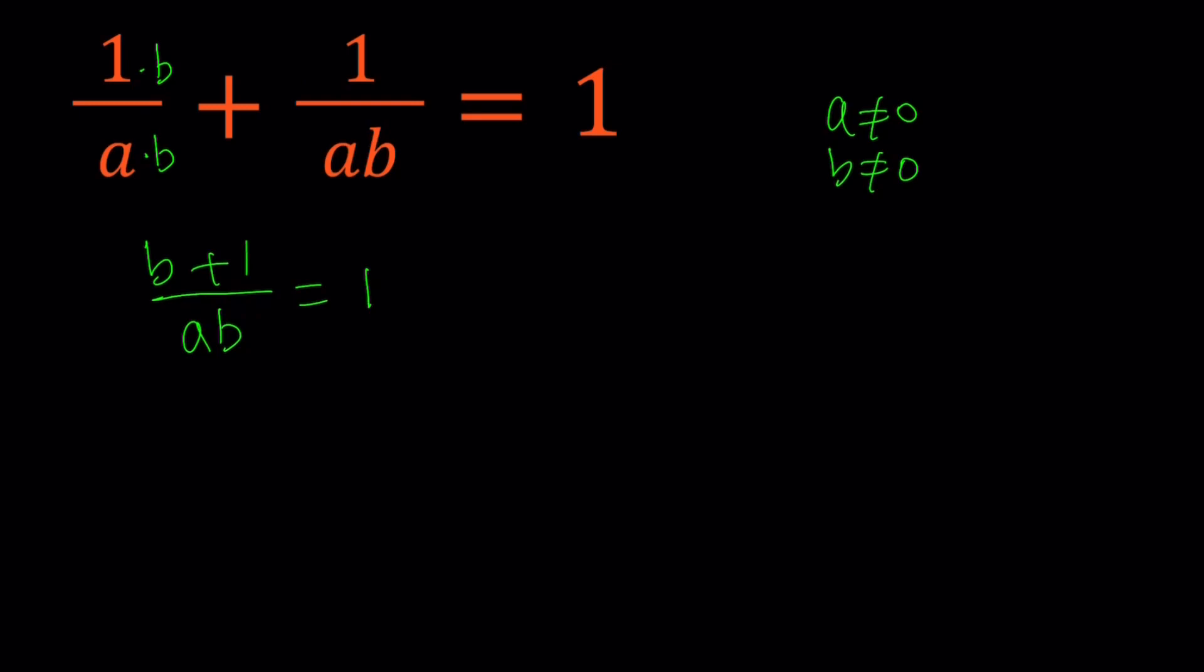All right, so let's go ahead and cross multiply here, we get ab equals b plus 1. And then from here, we can basically put everything that contains b on the same side, and get ab minus b equals 1. And then factor out b times a minus 1 equals 1.